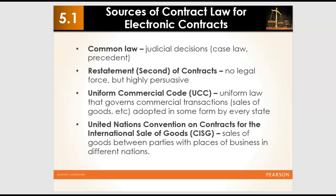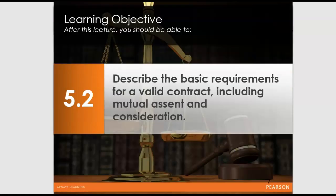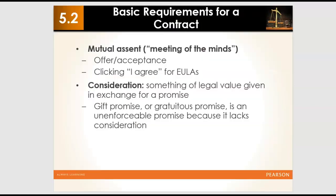Moving on, we'll look at the requirements for a valid contract. A contract is only valid if certain requirements are met. The first requirement is mutual assent — also called the meeting of the minds — where two parties agree. A simple example: when you go to Tim Hortons and order coffee, that's an oral contract. You are offering to buy a coffee and pay for it.